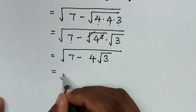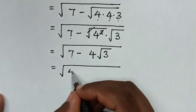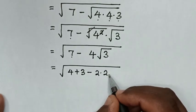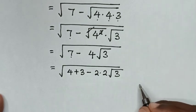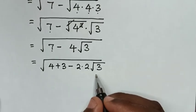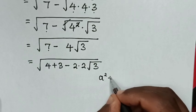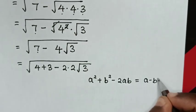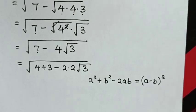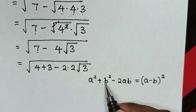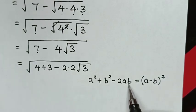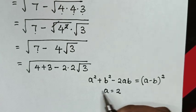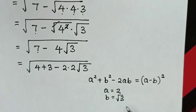In the next step, it will be equal to square root of 7, which is the same as 4 plus 3, then minus 4, which is the same as 2 times 2, then times square root of 3. This expression under the square root is in the form of a squared plus b squared minus 2ab, which equals a minus b, bracket squared. Comparing: a squared equals 4, b squared equals 3, and minus 2ab equals minus 2 times 2, therefore a equals 2 and b equals square root of 3.